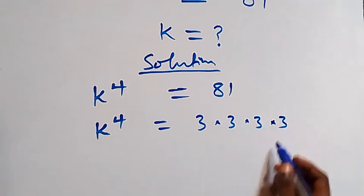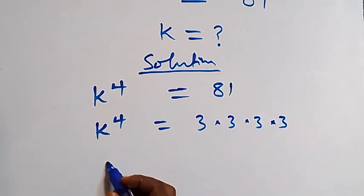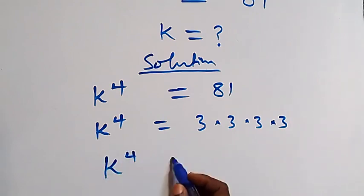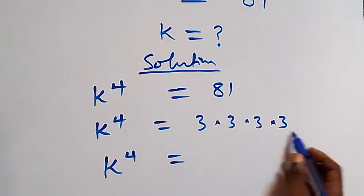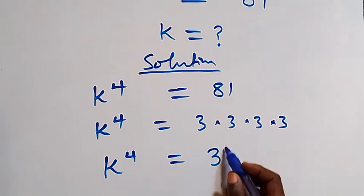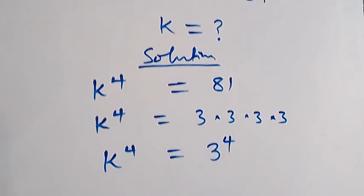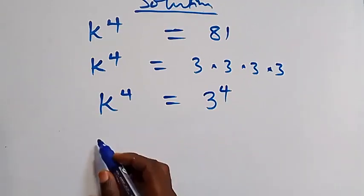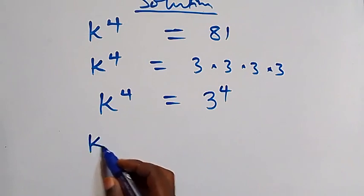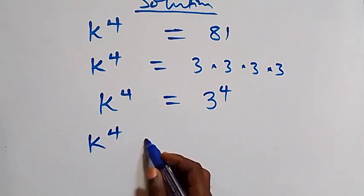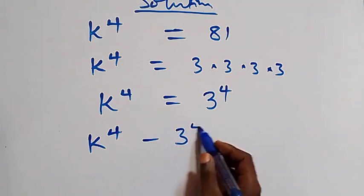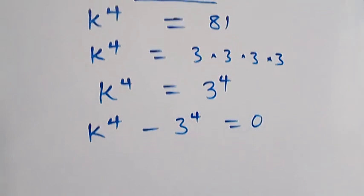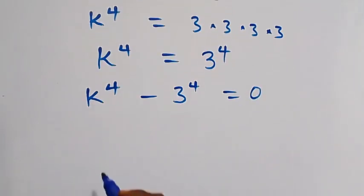...times 3. This is the same as k raised to power 4 equals 3 multiplied four times, that is 3 raised to power 4. The next step is to take 3 raised to power 4 to the left hand side, and this becomes k raised to power 4 minus 3 raised to power 4 equals 0.